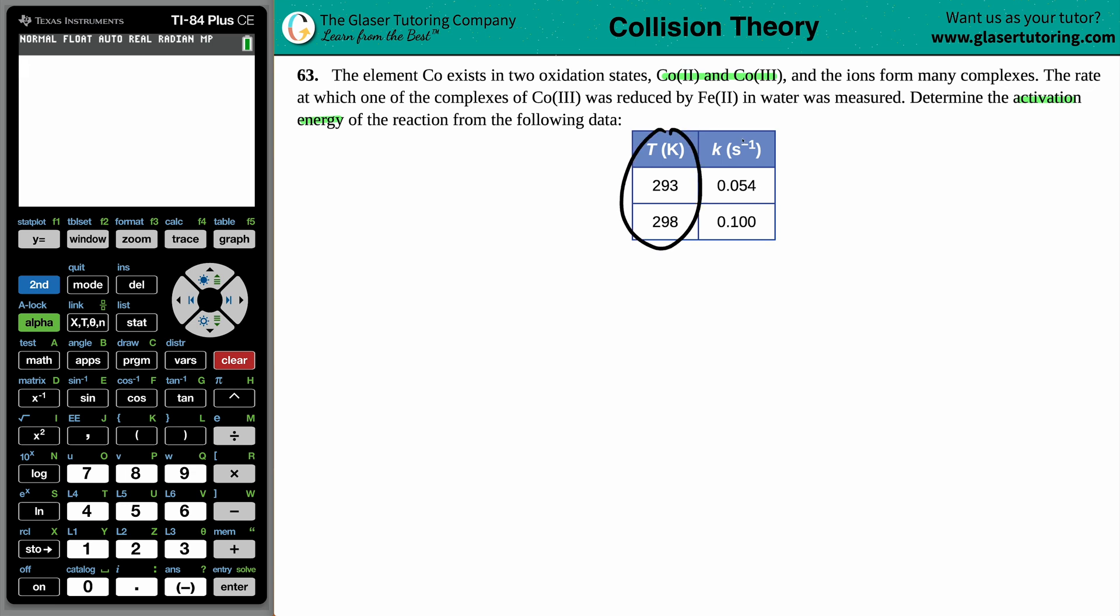We have two different temperatures and two different k values, which is the rate constant. I love these types of questions because whenever I see that they give me two temperatures and two rate constants and they're looking for an activation energy, I know exactly what to do because we are going to be doing one formula and one formula only, and that formula is this.